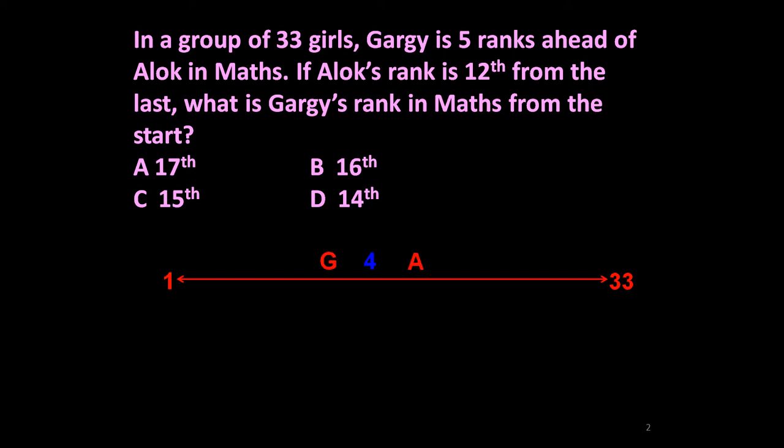Gargi is 5 ranks ahead of Alok in Maths. Here, Gargi, Alok, 1 and 4, 5. So Gargi is 5 ranks ahead of Alok in Maths. Alok's rank is 12th from the last, it means 11 on this side, because Alok is 12th from the last.